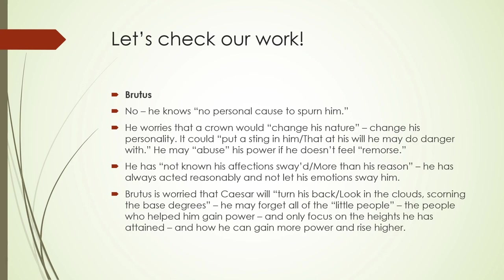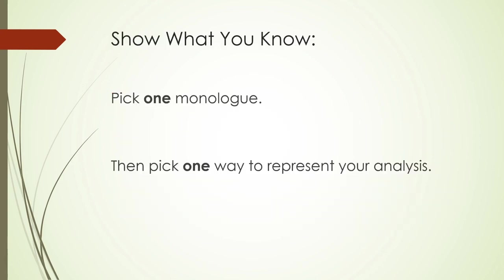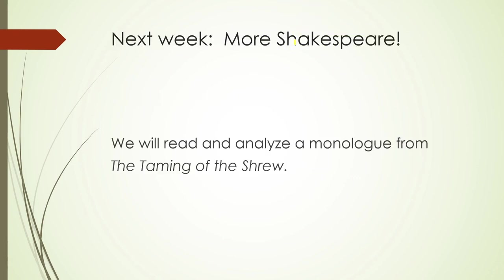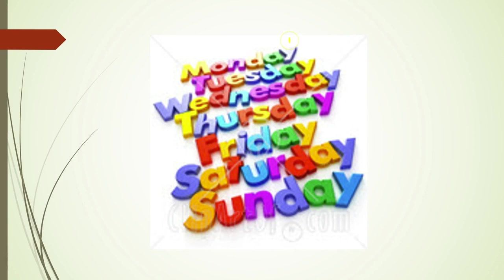Now you have a really good understanding of the thoughts of both men as they contemplated murder. Consider which murderer was the most foul or the worst. Turn to the Show What You Know in your packet, and pick one monologue and one way to represent your analysis. You have three ways provided in your packet. Next week, more Shakespeare — we will read and analyze a monologue from The Taming of the Shrew, which is much lighter than the monologues we read today. Until then, be safe, be well, and have a great week. Goodbye.